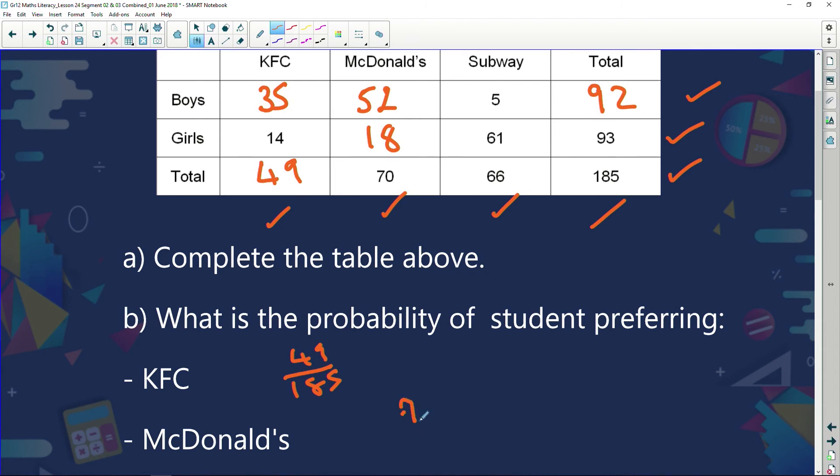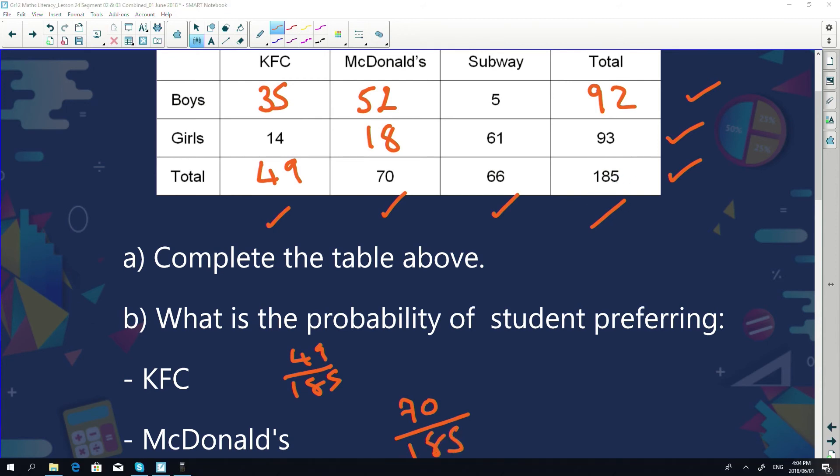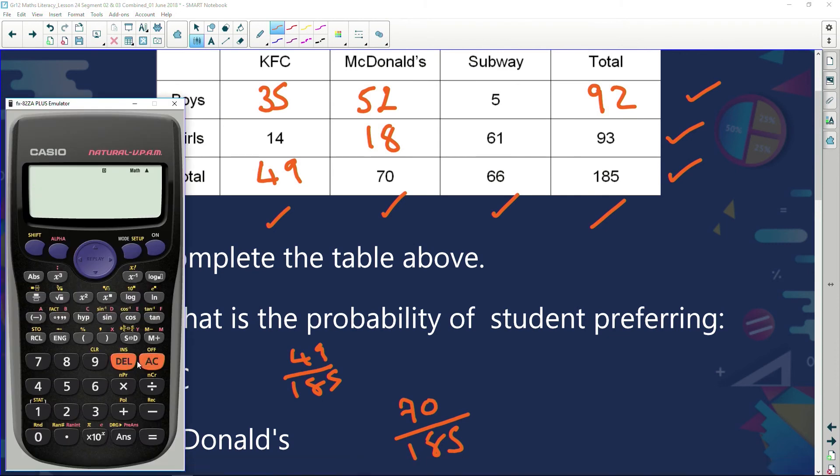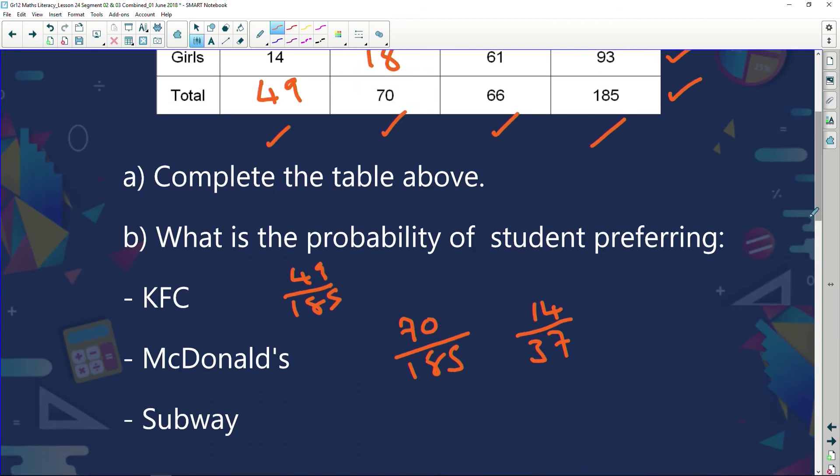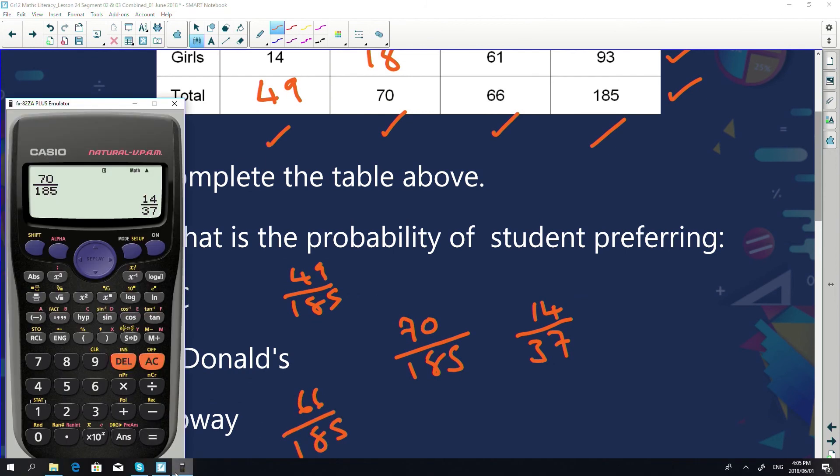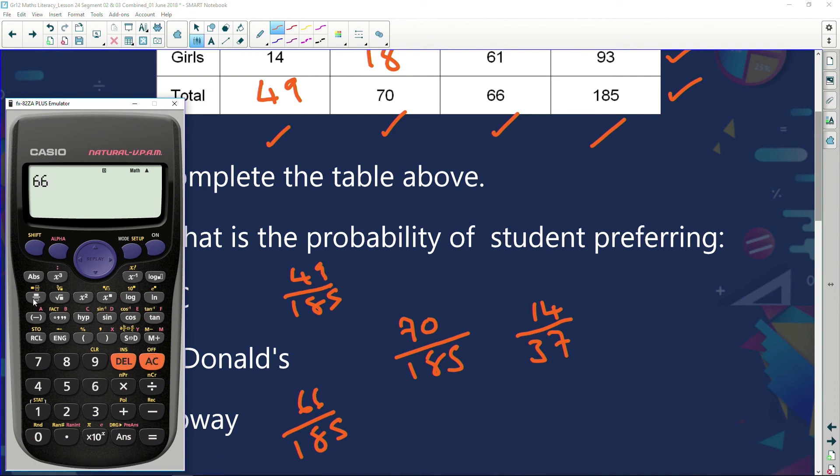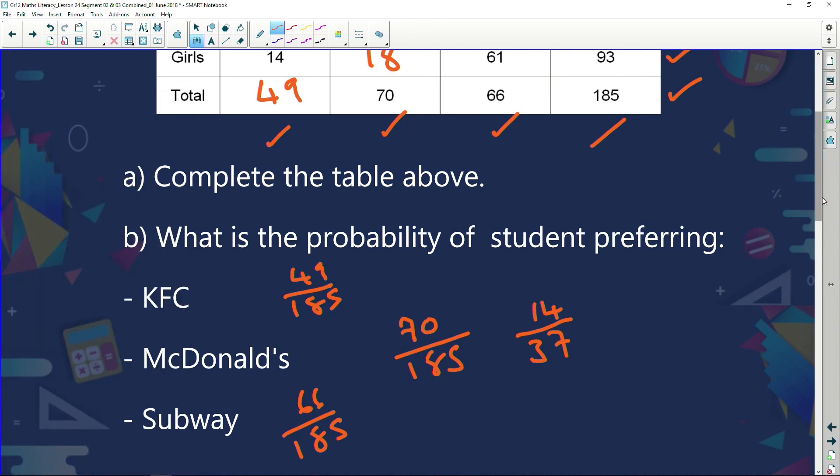McDonald's, we said there were 70 over a total of 185 students that we questioned. We can definitely simplify that one. And let's see how we do that. 70 over 185, and that gives me a total of 14 out of 37. So every 37 people we questioned, 14 of them would say they prefer McDonald's. Subway: 66 out of a possible 185. Can we simplify that down? 66 over 185 equals—can't simplify it—66 over 185.